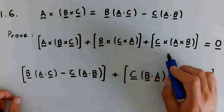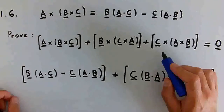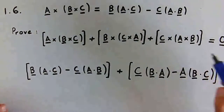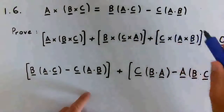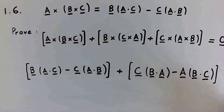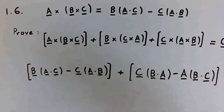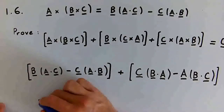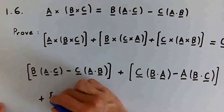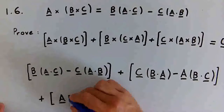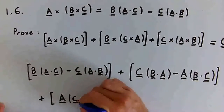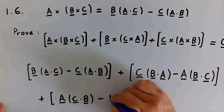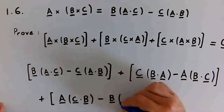Now there's just the third triple cross product to deal with, which is C cross (A cross B). Again, we're using the BAC minus CAB rule with the order very carefully changed. We can write this as A times (C dot B) minus B times (C dot A).